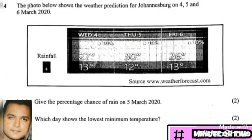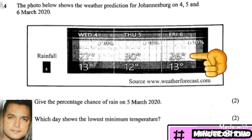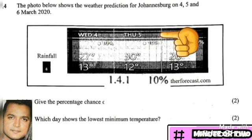Section 1.4 shows a weather prediction photo for Johannesburg on the 4th, 5th, and 6th of March 2020. The image has a key showing symbols for rainfall and displays maximum and minimum temperatures for each day. Question 1.4.1 asks for the percentage chance of rain on 5th March 2020. Using the key, we see there is a 10% chance of rain on that day.